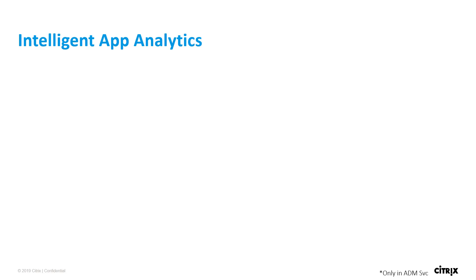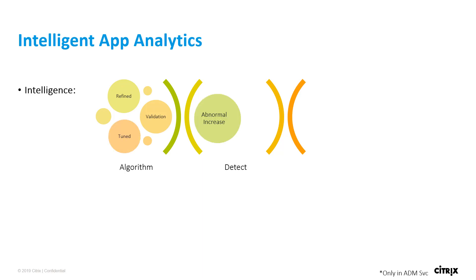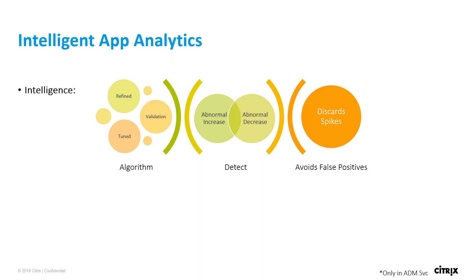This feature has inbuilt intelligence. The algorithm it uses is refined, validated using customer data, and fine-tuned to make it optimal. In terms of detection, it not only helps detect an abnormal increase but also helps in abnormal decrease detection of the server response time. And it avoids false positives — that is, it discards the spikes.